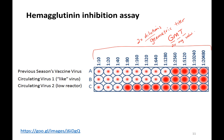In this example, a person at a 1-to-1280 dilution could still prevent hemagglutination — so they had a lot of antibodies that could bind to that specific virus and prevent it from clumping up the red blood cells. When they tried a different virus, they saw a slightly lower dilution, so slightly less antibody response, but still pretty good. That's why they say this circulating virus is like this other one, because the inhibition value — the dilution at which it could inhibit hemagglutination — was similar.